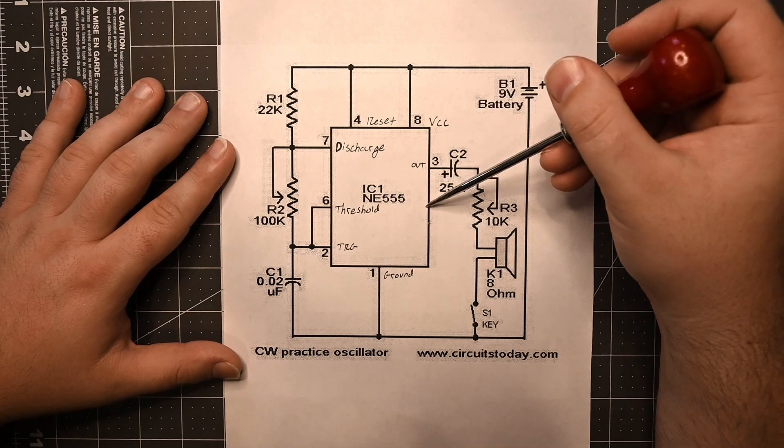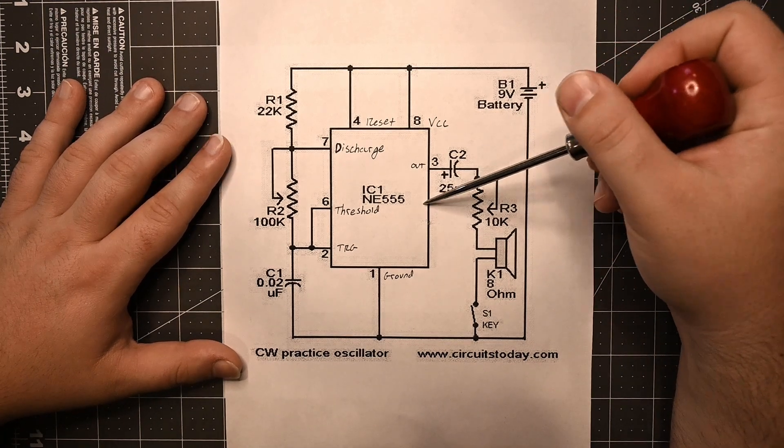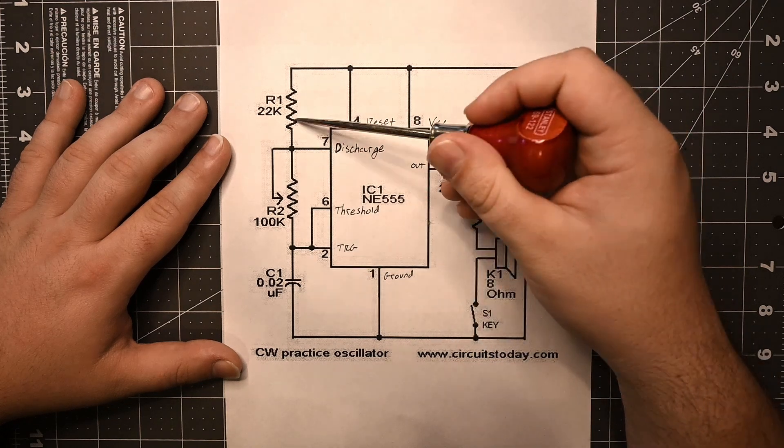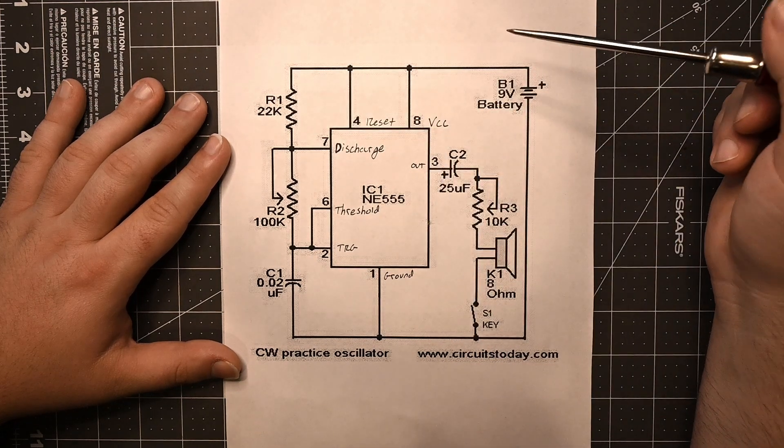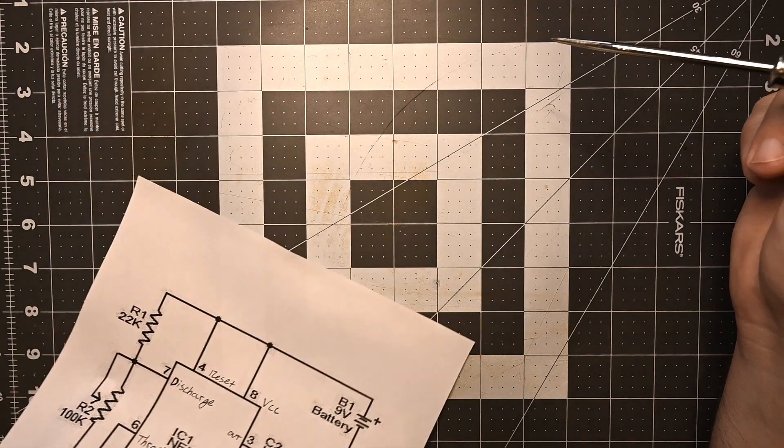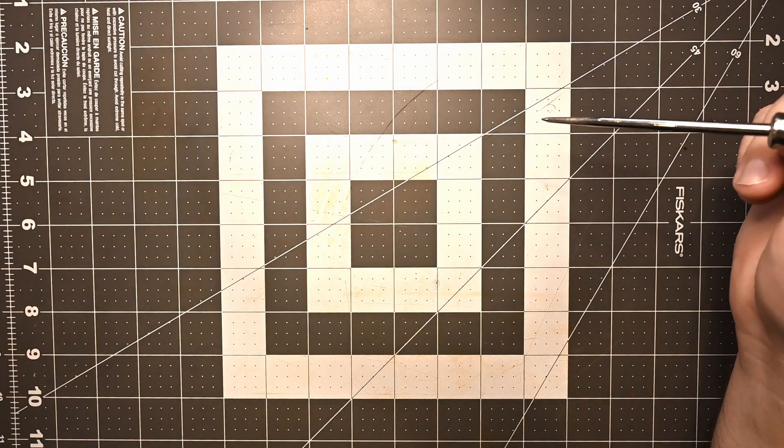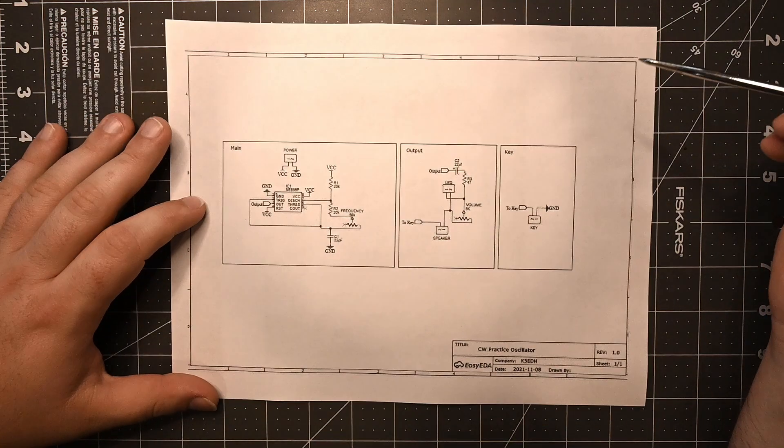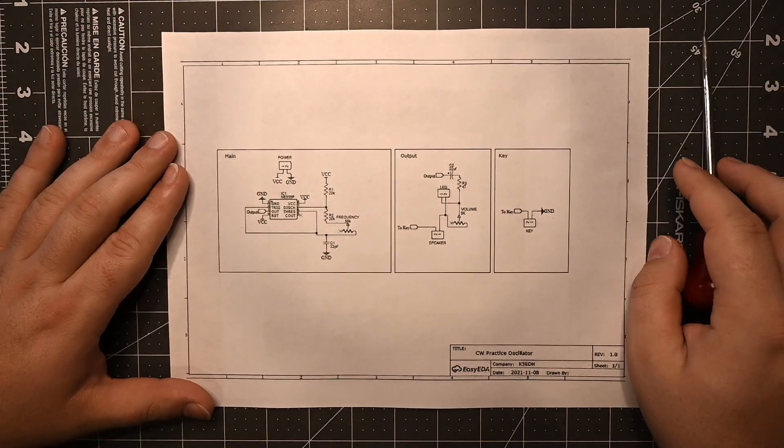This limits the current to the speaker to control the amplitude of the square wave and limit the volume. Then it goes through the key, which is the actual telegraph key that we're going to be using, and then to ground. So this is the circuit that I based the design off of. And I didn't change too much, but I did mess with some of these values. These values didn't work great for me. I guess your mileage may vary, but I took that and changed it up a little bit.